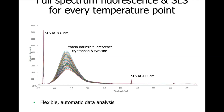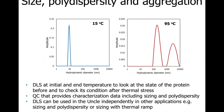The temperature profiles are built from the analysis of changes in SLS signals and full spectrum fluorescence as the temperature increases. As the samples are heated, the environment around aromatic groups undergoes disruption and consequently we observe changes in the fluorescence signal — both intensity and position of the emission band. The full spectrum fluorescence allows for flexible data analysis and in the UNCLE the data analysis is done automatically. The principle of SLS measurement is that larger particles scatter more light, and as proteins aggregate during the thermal ramp, the SLS signal increases allowing us to see when aggregation occurs.